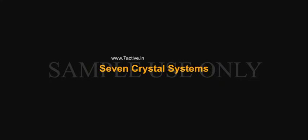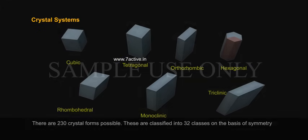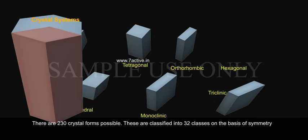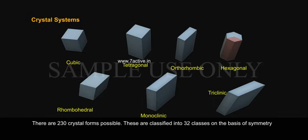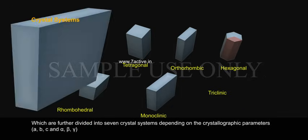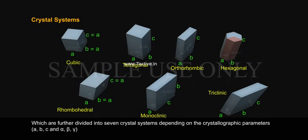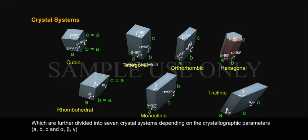Seven crystal systems: there are 230 crystal forms possible. These are classified into 32 classes on the basis of symmetry, which are further divided into seven crystal systems depending on the crystallographic parameters a, b, c and alpha, beta, gamma.